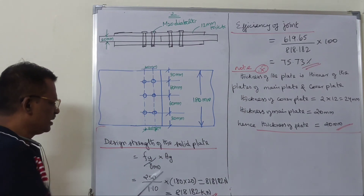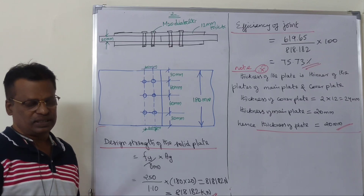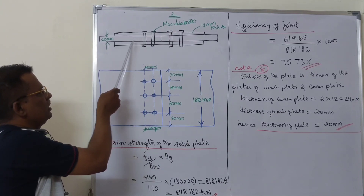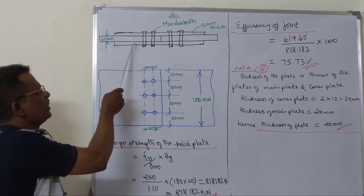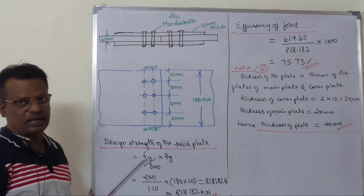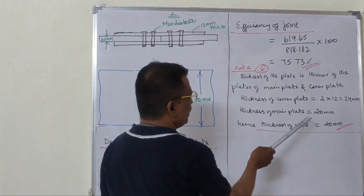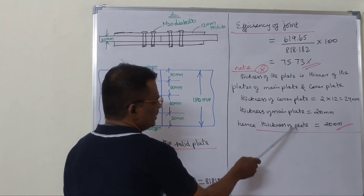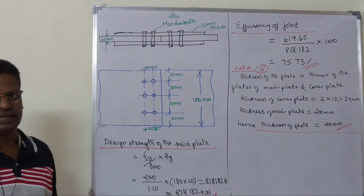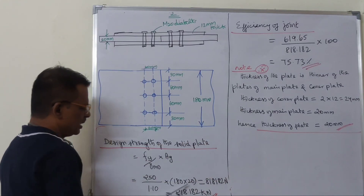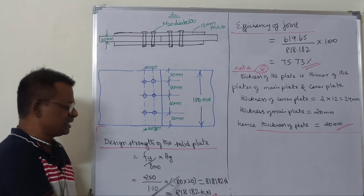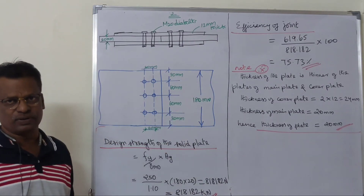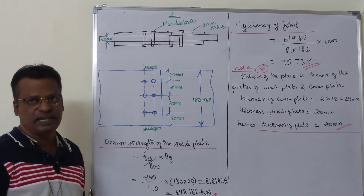The joint thickness details: the main plate is the same as the main plate. The thickness of the unit is 24 mm. The thickness of the main plate equals 20 mm. Sometimes we have to make changes. The efficiency of the joint is 75.73%.